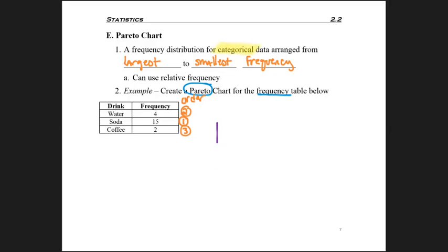Now I'm ready to go ahead and draw my L shape. When I list my categories across the bottom, since they have to be listed from largest to smallest, I have to put soda first, then water, and coffee last. And I labeled it that these were drinks because that's the information I was given.